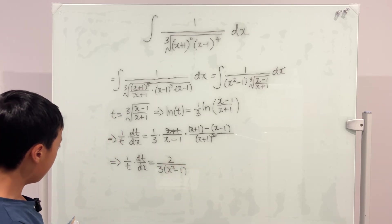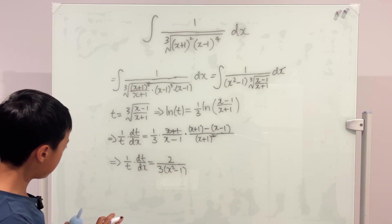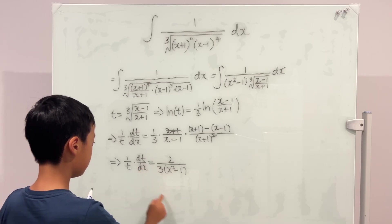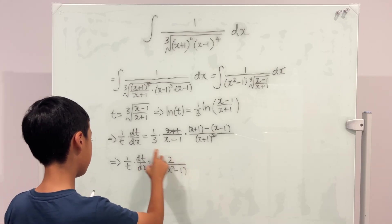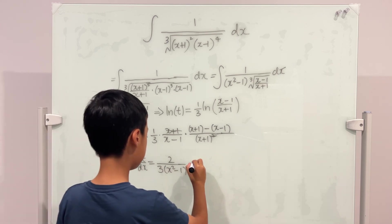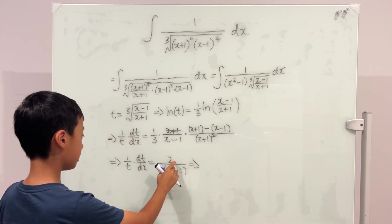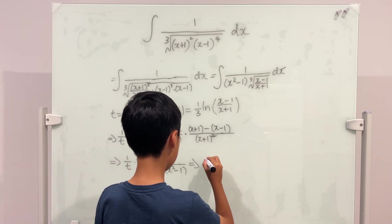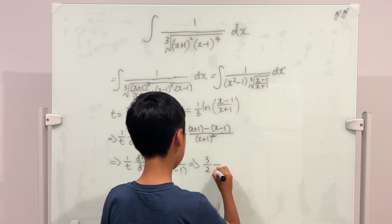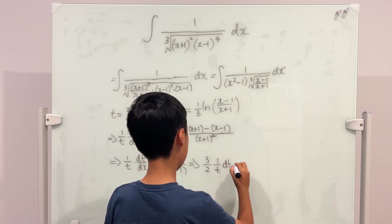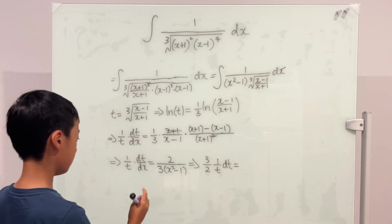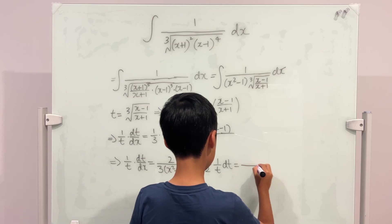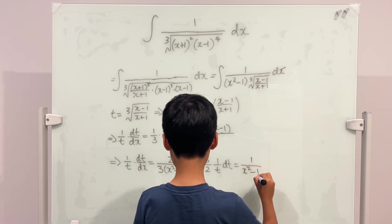Now this is kind of like differential equation vibes here. We can multiply the dx to that side and bring this to the other side. The left hand side will become 3 over 2 times dt and this is equal to, we already multiplied the dx to that side, so it's 1 over x squared minus 1 dx.